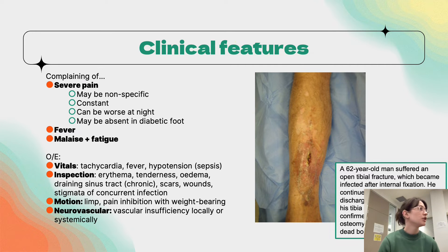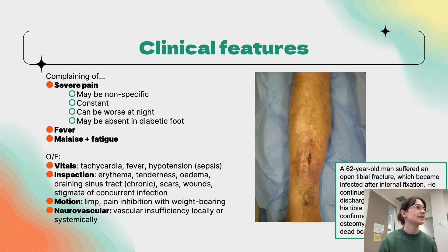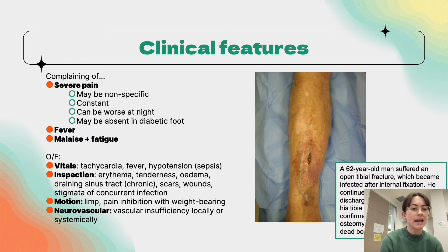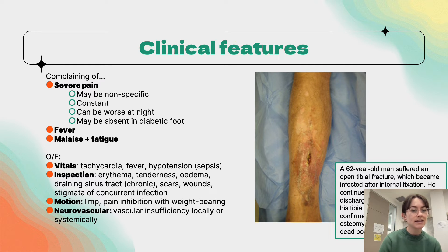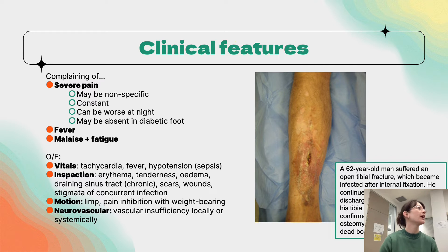On examination, you may see tachycardia, fever, and hypertension, particularly in those with hematogenous spread who are septic. On inspection of the limb or spine, look for erythema, tenderness, edema, and a draining sinus tract — more common in chronic osteomyelitis — as well as scars, wounds, and signs of concurrent infection. Children may present with a limp, and there may be signs of vascular insufficiency locally or systemically.